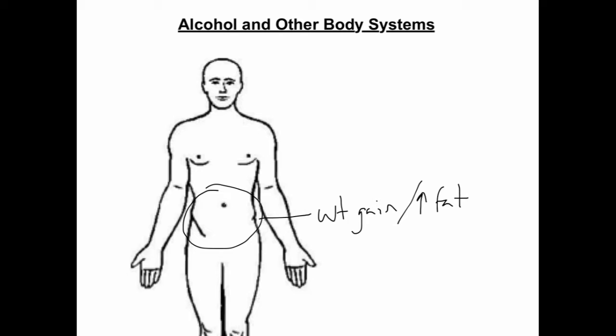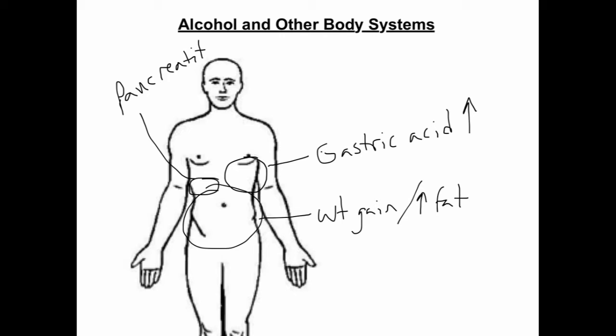Increased gastric acid secretion and increased histamine lead to inflammation, particularly in the stomach and esophagus, leading to gastritis, esophagitis, ulceration, and GERD. Alcoholism is the most common cause of pancreatitis. The metabolism of alcohol and spasm at the sphincter of Oddi all lead to autodigestion of the pancreas.